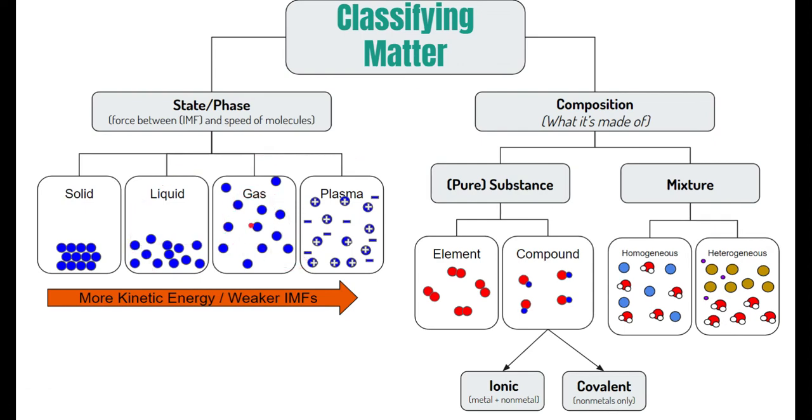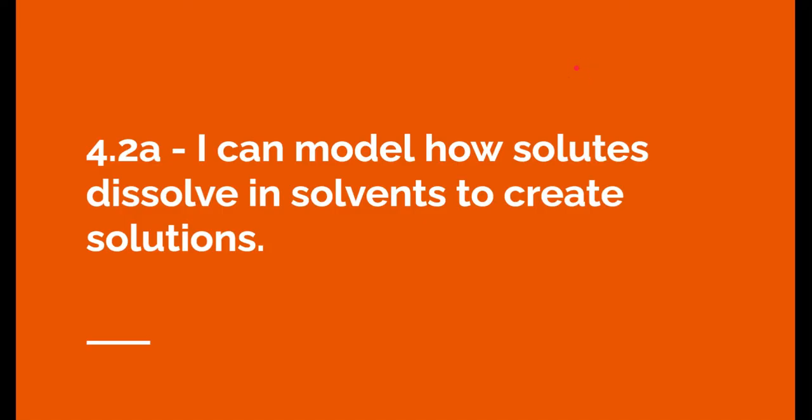Gases have basically almost lost their intermolecular forces, and they've got a lot of speed. They're moving all over the place. And plasma is the same, even more energy and so much speed that the positive and negative parts of the atom rip apart from each other and create a sea of positive-negative charge.